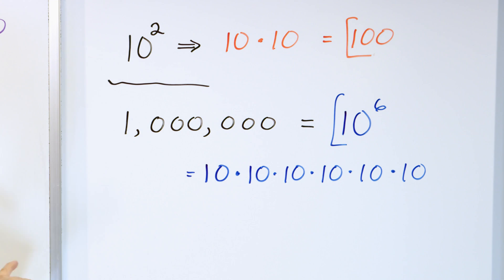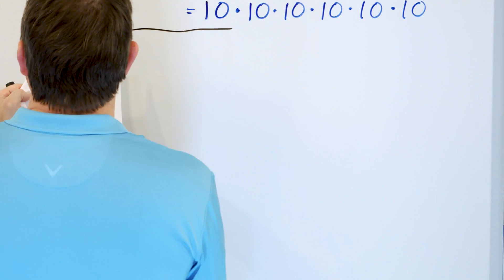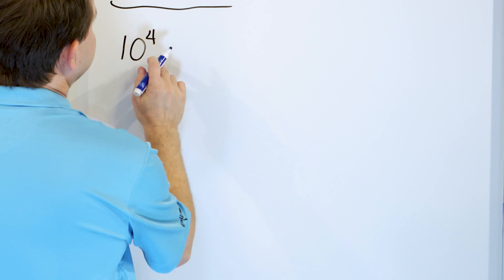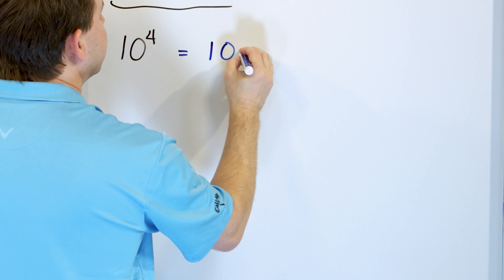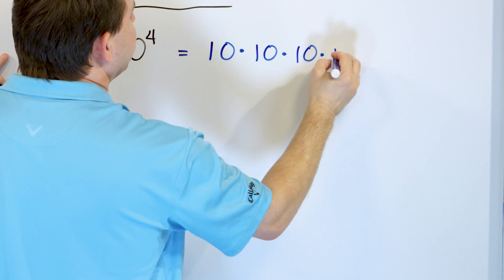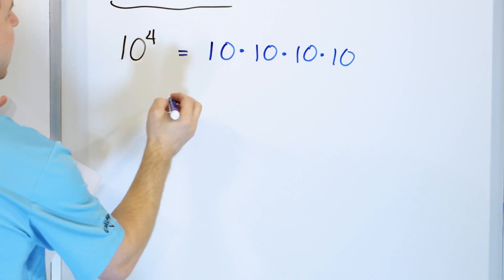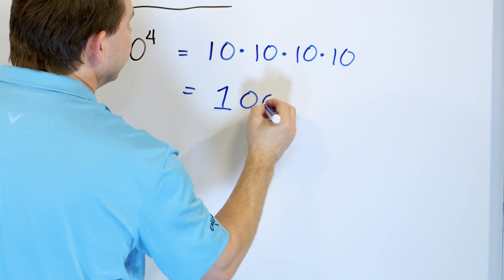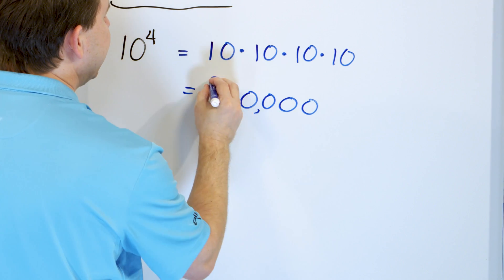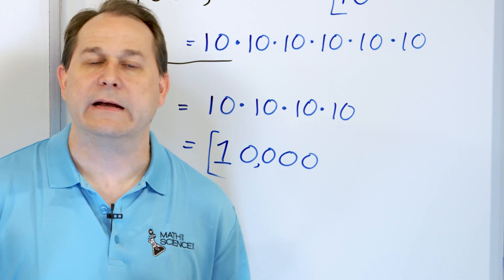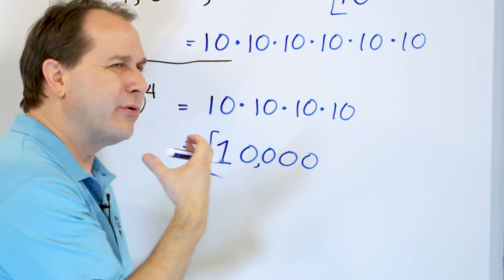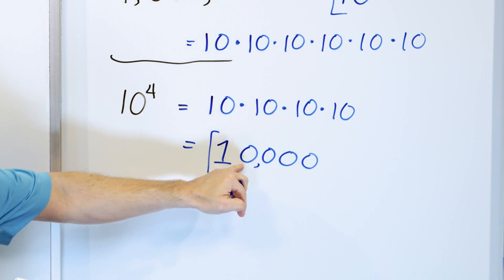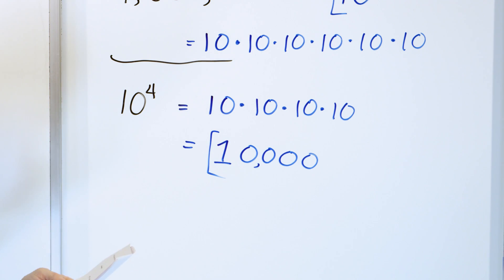Next problem: take ten to the power of four and write it as a standard number. Ten to the power of four means ten multiplied by ten multiplied by ten multiplied by ten — just four of them. You can multiply them out, or just say it's a one followed by four zeros. Put a comma and the answer is ten thousand. When it's ten raised to an exponent, you can immediately write it as the number one with that many zeros following.